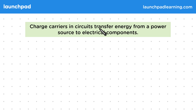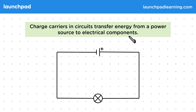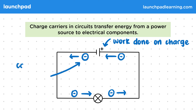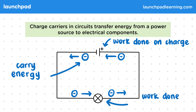Charge carriers in circuits transfer energy from a power source to electrical components. A cell supplies energy by doing work on the charge carriers to give them kinetic energy. The energy is carried around the circuit through the kinetic energy of the electrons. Work is then done on the component as the charge carriers transfer energy to it, so overall this process transfers the chemical store in the cell to the components.